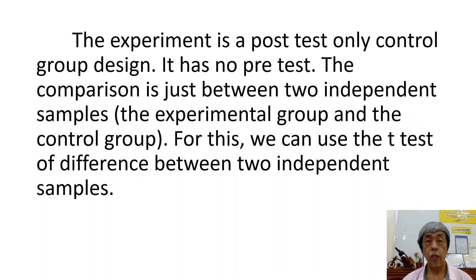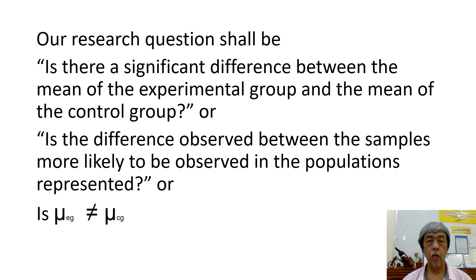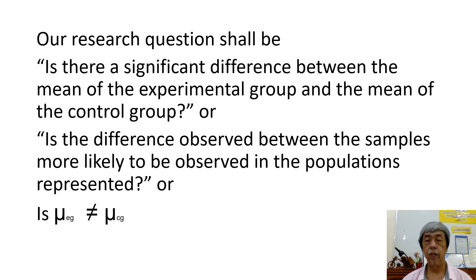The experimental group and the control group. For this, we can use the test of difference between two independent samples. Our research question shall be: Is there a significant difference between the mean of the experimental group and the mean of the control group? Or, is the difference observed between the samples more likely to be observed in the populations represented? Or, is the population mean of the experimental group not equal to the population mean of the control group?